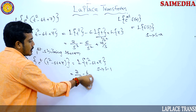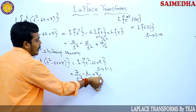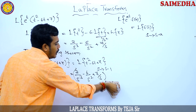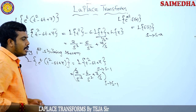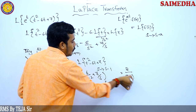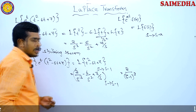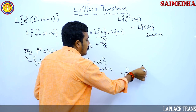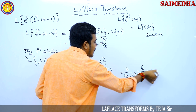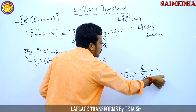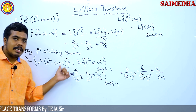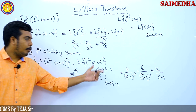In that we have to replace s with s minus 1. Replacing s with s minus 1 gives: 2/(s-1)³ minus 6/(s-1)² plus 7/(s-1). This is the Laplace transform of e^t times (t² minus 6t plus 7). Just pause the video and copy the problem.